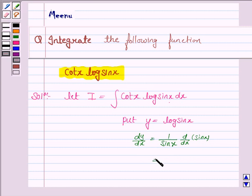We know that the derivative of sin x is cos x. So this becomes cos x over sin x, which equals cot x.